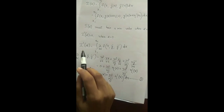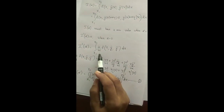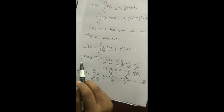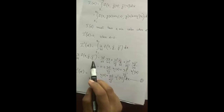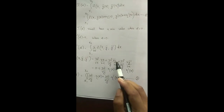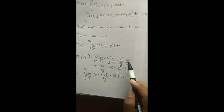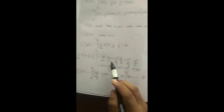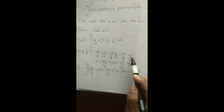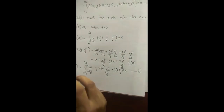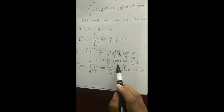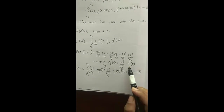Consider I'(α): I'(α) = integral from x1 to x2 of ∂/∂α f(x, ȳ, ȳ') dx. Now, ∂/∂α f(x, ȳ, ȳ') = ∂f/∂x · ∂x/∂α + ∂f/∂ȳ · ∂ȳ/∂α + ∂f/∂ȳ' · ∂ȳ'/∂α. Since ∂x/∂α = 0, ∂ȳ/∂α = η(x), and ∂ȳ'/∂α = η'(x), we get ∂/∂α f(x, ȳ, ȳ') = ∂f/∂ȳ · η(x) + ∂f/∂ȳ' · η'(x).